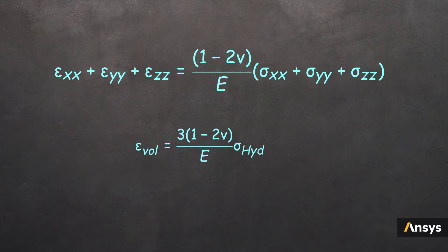If you carefully observe this equation, it also follows the Hooke's law. And this term is nothing but the resistance offered by the material to the change in its volume. In other words, this is the bulk modulus, and this relation tells us how it's related to the Young's modulus and Poisson's ratio.